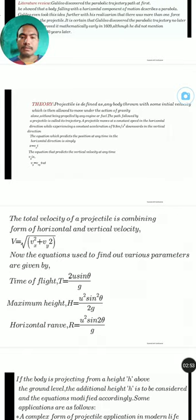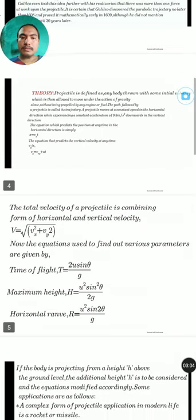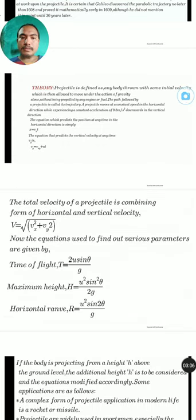A projectile moves at a constant speed in the horizontal direction while experiencing a constant acceleration of 9.8 m/s² downwards in the vertical direction. The equation which predicts the position at any time in the horizontal direction is simply x = vₓt, and the equation that predicts the vertical velocity at any time is vᵧ = v₀ᵧ + at.